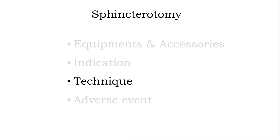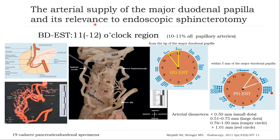The technique. This is a study of the anatomy of the major duodenal papilla and is relevant to endoscopic sphincterotomy. From the endoscopic view of the papilla, you can see that 11 to 12 o'clock is the best location for biliary duct sphincterotomy, and 1 to 2 o'clock is best for pancreatic duct sphincterotomy.